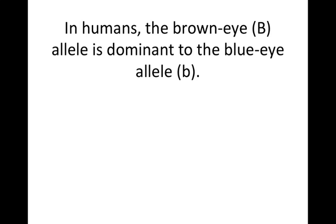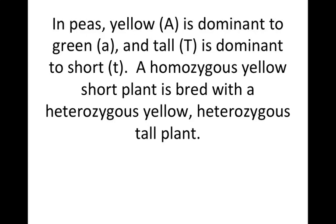We're starting off with some monohybrid crosses and we're going to move on now to a di-hybrid cross. I want you to tell me what is the ratio — it's going to be written out in the question, I'm just going to let you read it — but it's that same idea where if this were two heterozygous individuals it would be 9-3-3-1, but what is it now with these individuals?